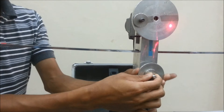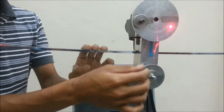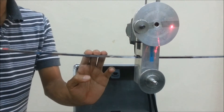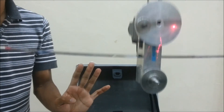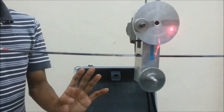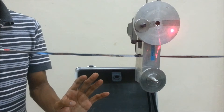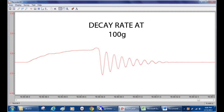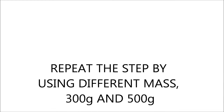For our third objective, we need to determine the decay rate for different masses. Using 100g as a demo, we put 100g below the motor and let the beam reach the equilibrium position without switching on the motor. We then apply force to the beam by hand at a fixed position, release it, and the beam vibrates in the Y direction. We can observe the decay graph in DESYLAB via the module recorder, showing how the decay rate evolves after releasing the beam. We repeat the steps using 300g and 500g.